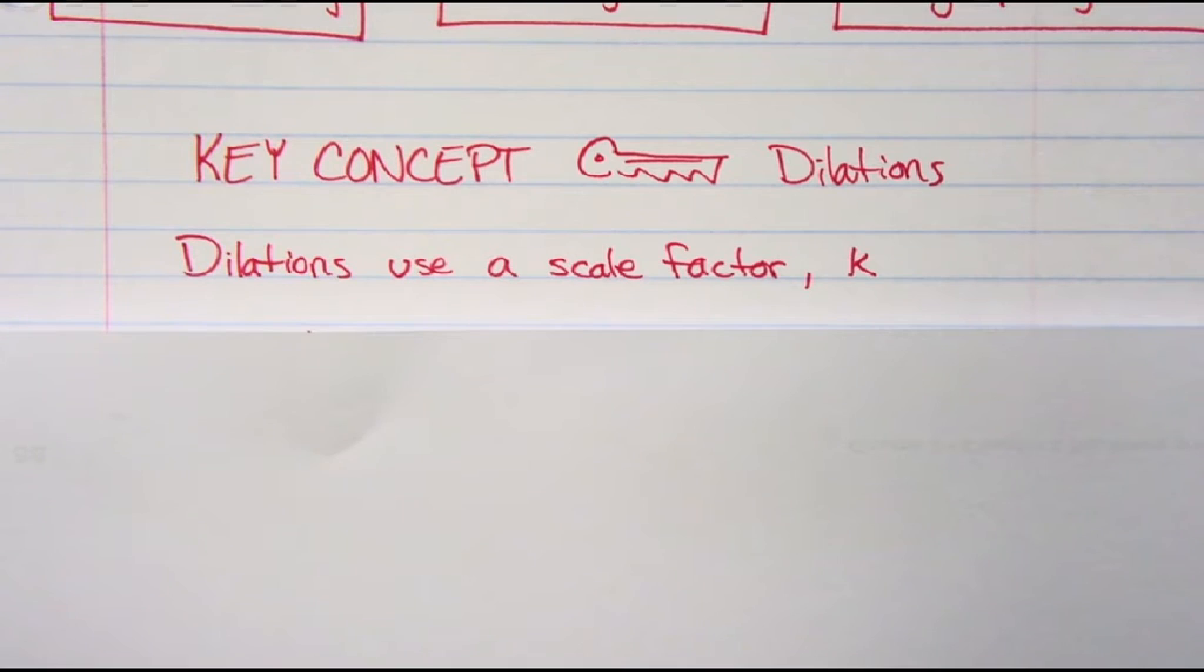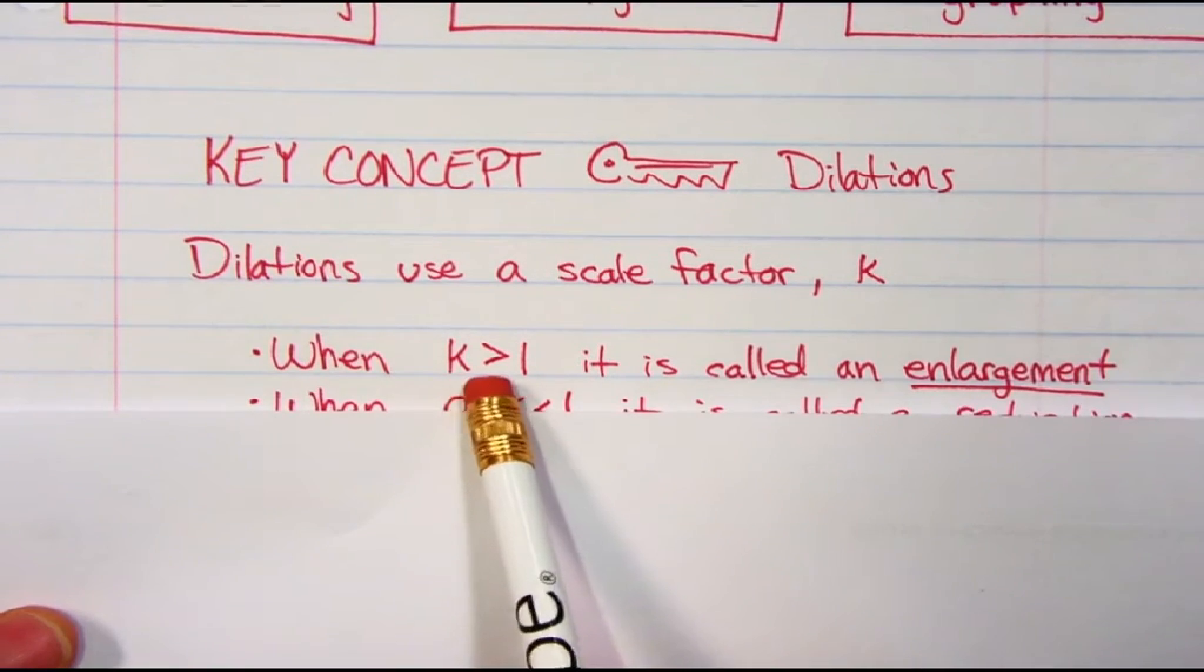Key concept about dilations. So in dilations we use a scale factor, it tells you how much bigger or how much smaller you want to get. They use the variable k for that. So when k, when the scale factor is larger than 1, it's called an enlargement. So if it's bigger than the original size, it's called enlargement.